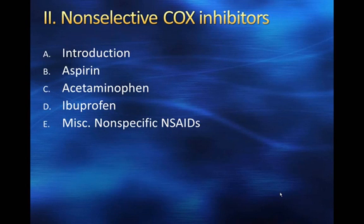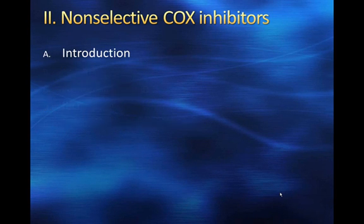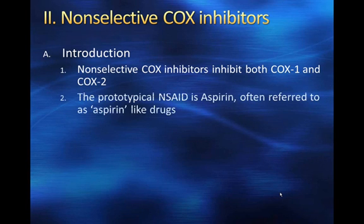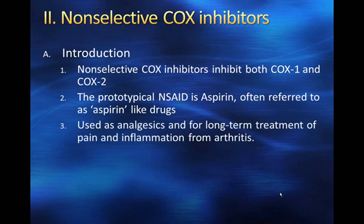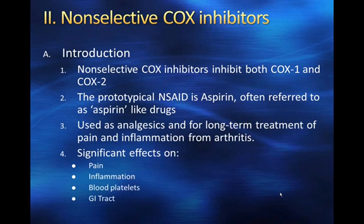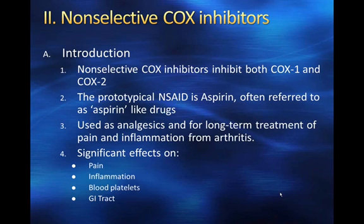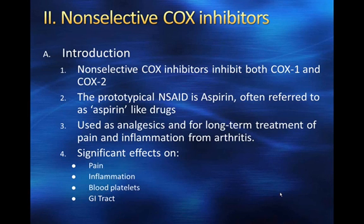Let's talk about the non-selective COX inhibitors: aspirin, acetaminophen, ibuprofen, and some other miscellaneous nonspecific NSAIDs. Non-selective COX inhibitors inhibit both the COX-1 and COX-2 enzymes. The prototypical NSAID is aspirin — these drugs are often referred to as aspirin-like drugs. They're used as analgesics and for long-term treatment of pain and inflammation from arthritis or sports injury, with significant effects on pain, inflammation, blood platelets, and the GI tract. Much pain, particularly from arthritis or a workout injury, is inflammation — so if you can treat the inflammation, you've treated the pain. Fortunately, these drugs treat both.